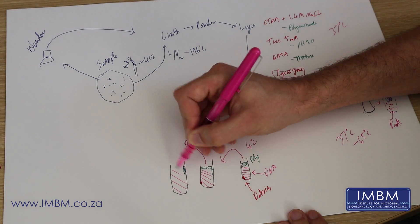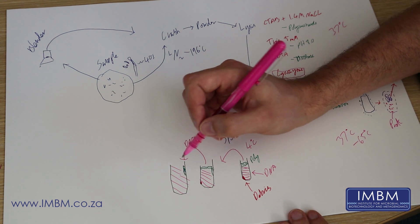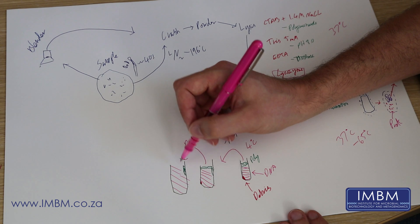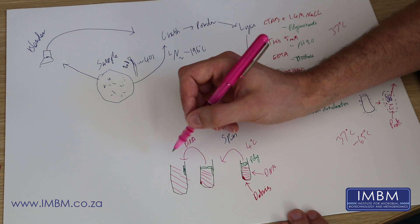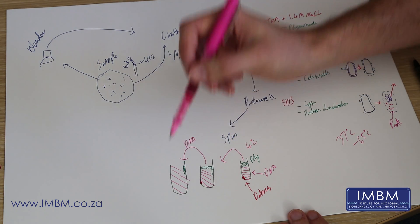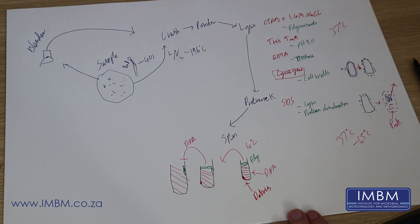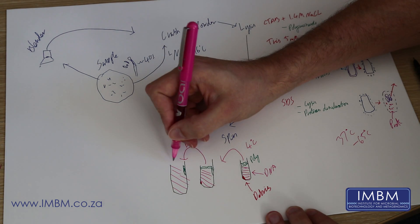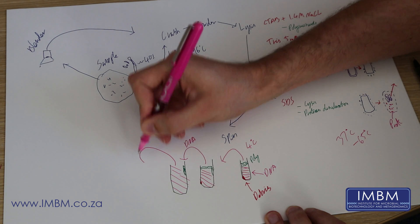You end up with what is relatively clear. At this point, your solution should be clear liquid. It may have a slight color to it, but it should be clear. When I normally do this, it's pink, which is why I'm using the pink pen. So now you have this and you want to do your clean-up.